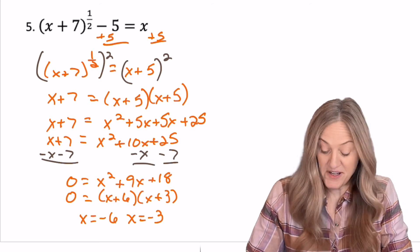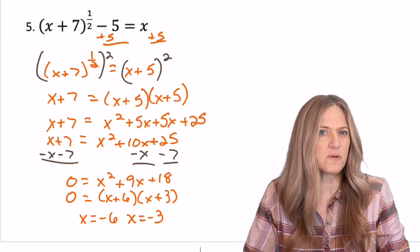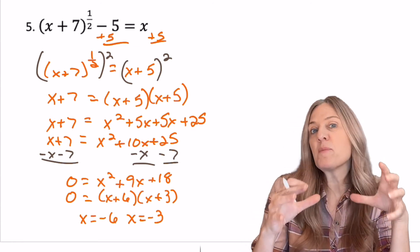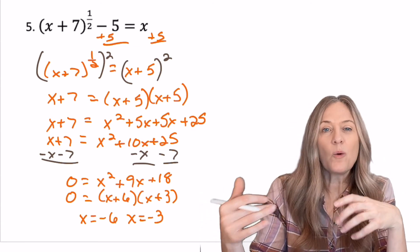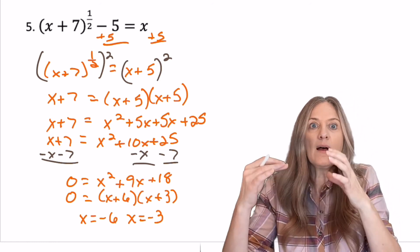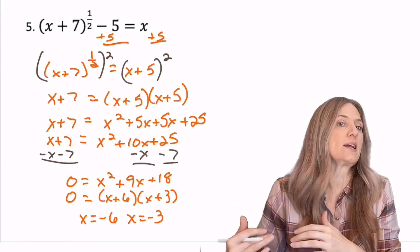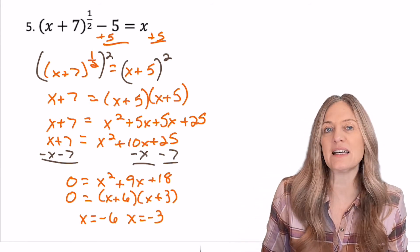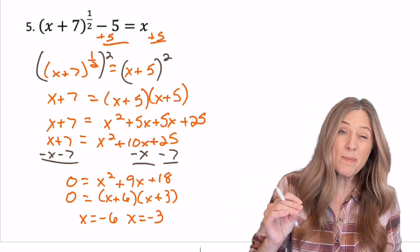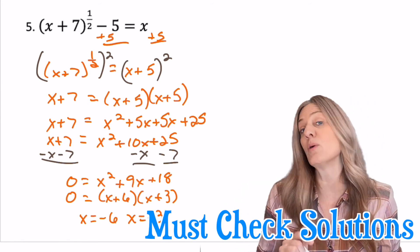Using zero product property, I get x equals negative six, x equals negative three. Now, there's a problem here. When we squared both sides and we created this quadratic, we created a situation where we might get a false solution. So it's a solution to the problem that we created, but it's not necessarily a solution to the original problem. So we need to go all the way back to the original problem and test both solutions.